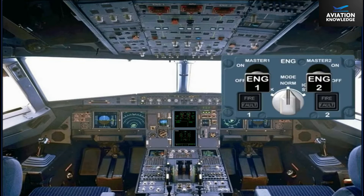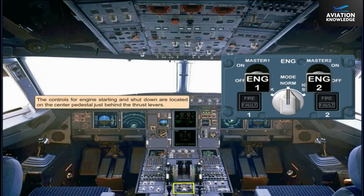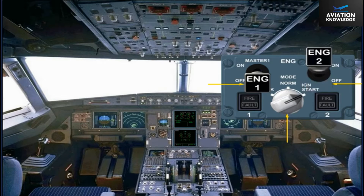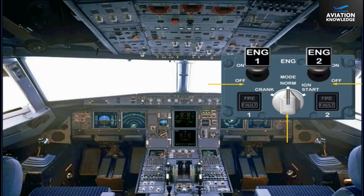The controls for engine starting and shutdown are located on the center pedestal, just behind the thrust levers. The engine master switches and the engine mode selector enable the pilots for engine automatic and manual starting, engine ventilation, dry cranking, and engine shutdown. Once the engines are running, the mode selector can also provide continuous ignition. The panel also has a fire and fault light for each engine.